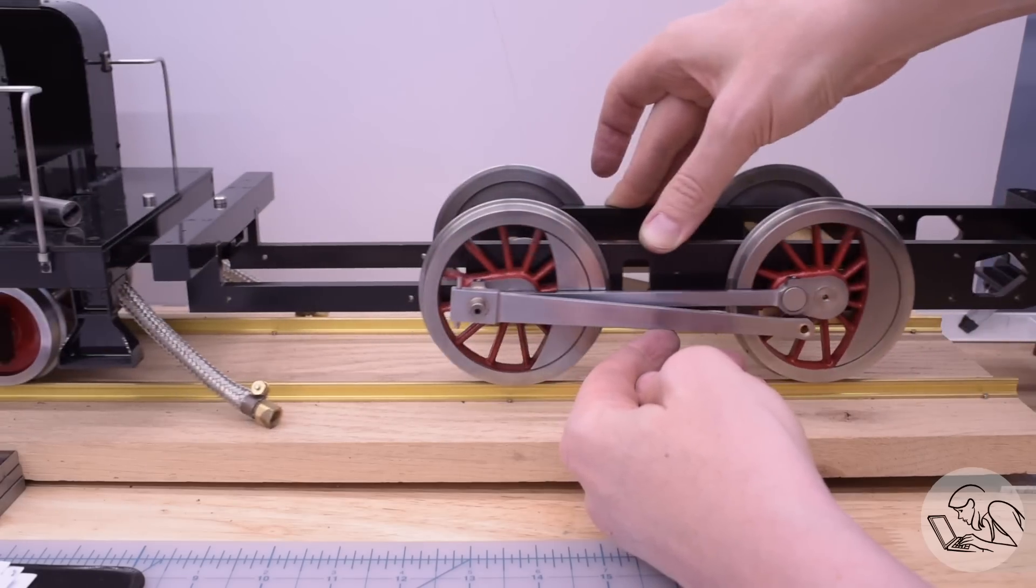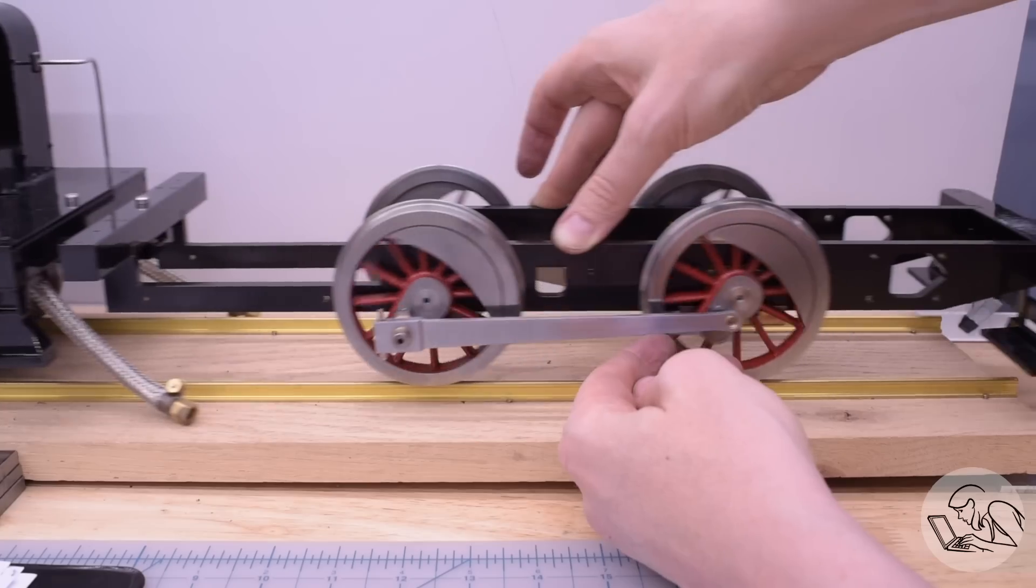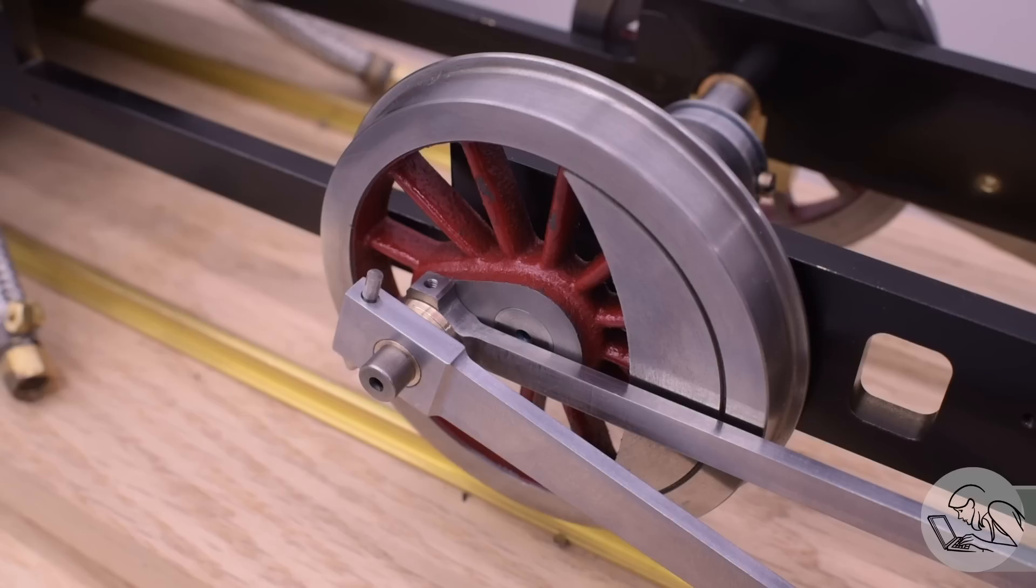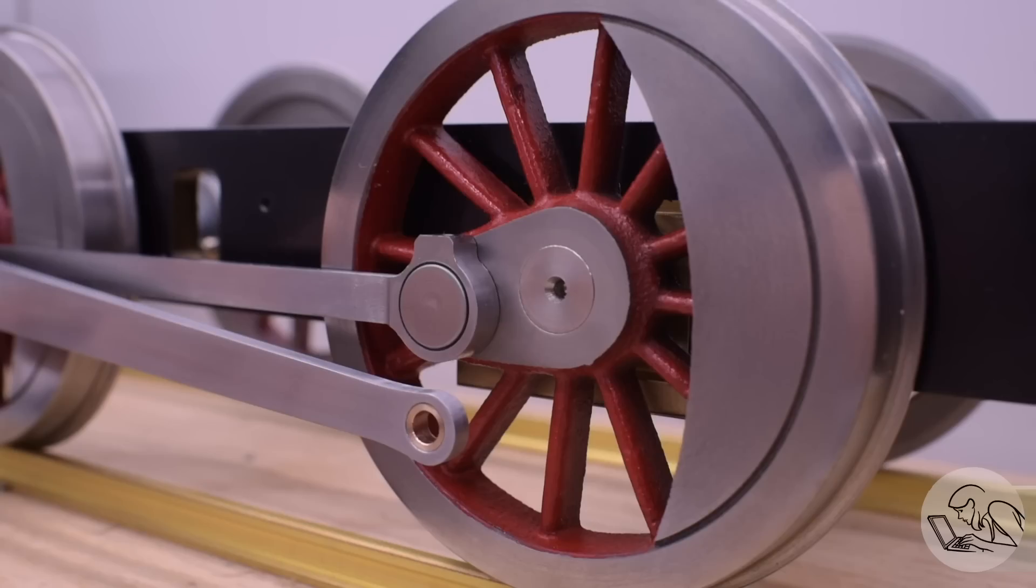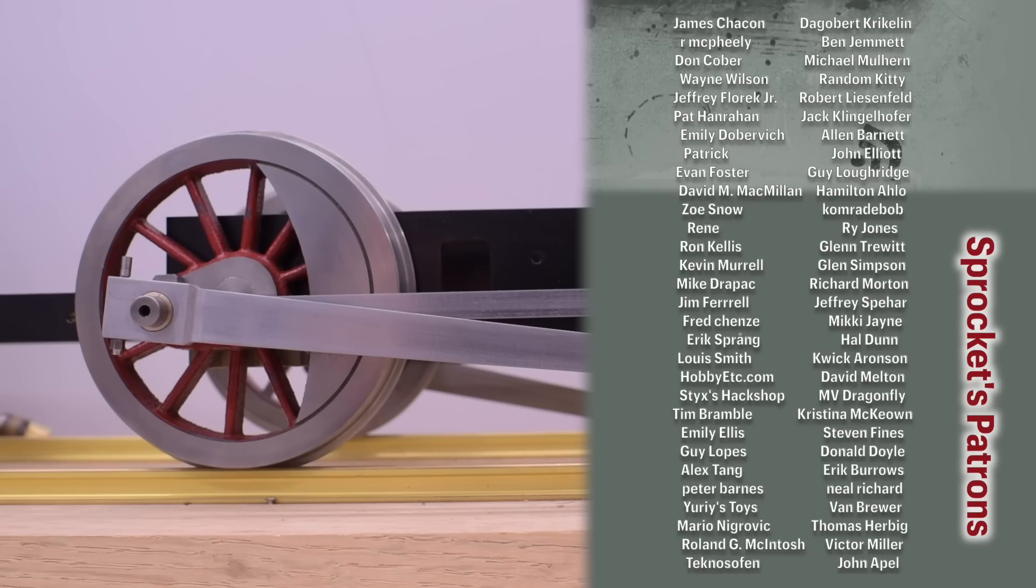These were quite a bit easier to make than the side rods, both because they're a simpler geometry, and also because I learned a lot about making this type of part when I did the side rods. I'm really pleased with how they came out. I hope you enjoyed watching the process of them being made. Maybe this will inspire you to do a little bit of locomotive work of your own. Thank you very much for watching, and thanks to my patrons for making all of this content possible. We're going to get into the valve gear proper here very soon, so stay tuned for that. It's going to get exciting, and I will see you next time.